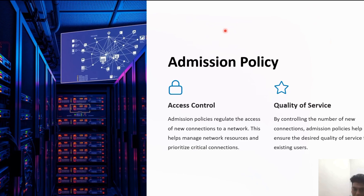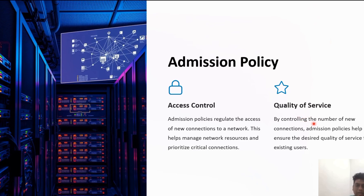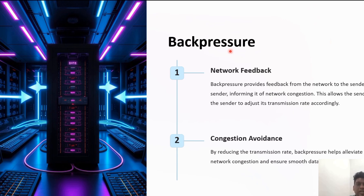Selective reject method sends only the specific lost or damaged packets. Admission policy depends on access control and quality of service. An admission control mechanism, which is a quality of service mechanism, can prevent congestion in virtual circuit networks. Switches in a flow first check the resource requirements of a flow before admitting it into the network. A router can delay establishing a virtual circuit connection if there is congestion in the network.